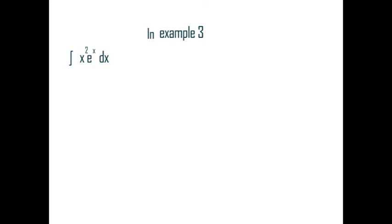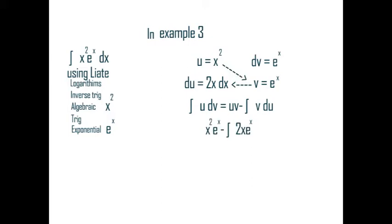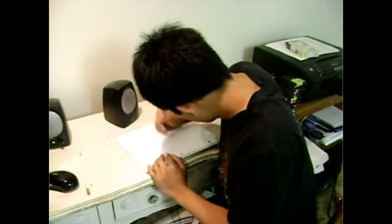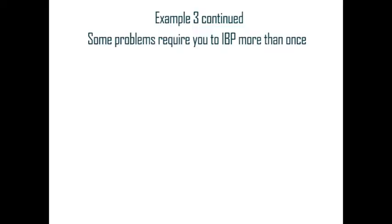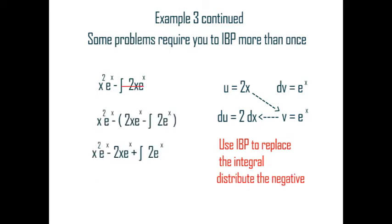Don't forget plus C. There's more. Example 3: Integrate x squared times e to the x dx. Using LIATE, u equals x squared and dv equals e to the x dx. The derivative of x squared equals 2x, and the anti-derivative of e to the x dx is still e to the x. Plugging that into the equation, we can see that we cannot integrate 2x e to the x dx directly. In some problems, you might have to integrate more than once. Using LIATE still, the second u equals 2x and the second dv equals e to the x dx. The derivative of 2x equals 2, and the anti-derivative of e to the x dx is still e to the x. Use IBP to replace the integral of 2x e to the x dx. Distribute the negatives, then integrate 2 e to the x dx, leaving us with x squared e to the x minus 2x e to the x plus 2 e to the x.